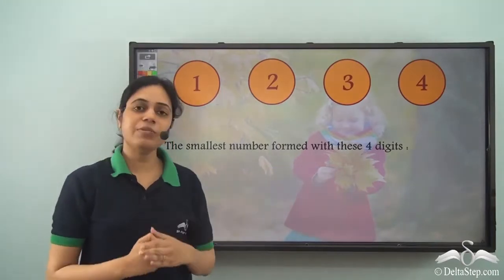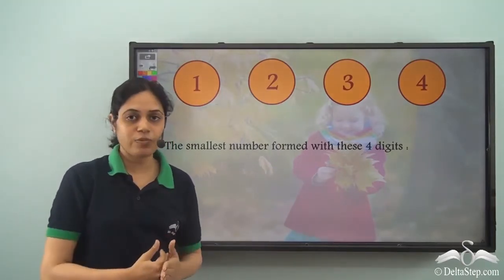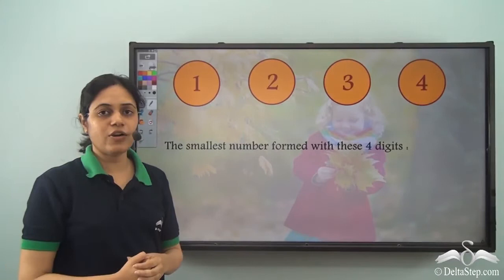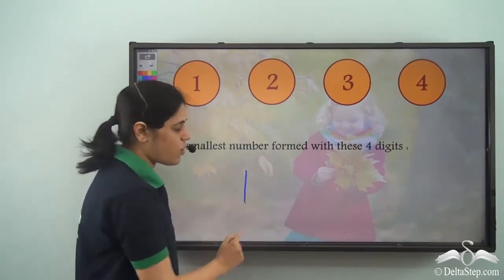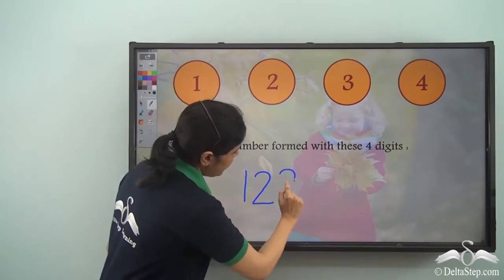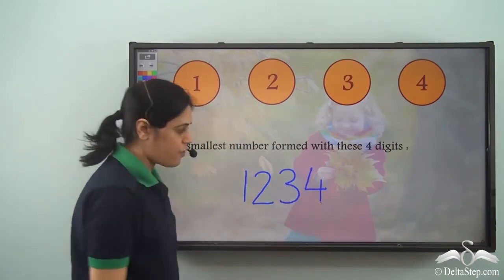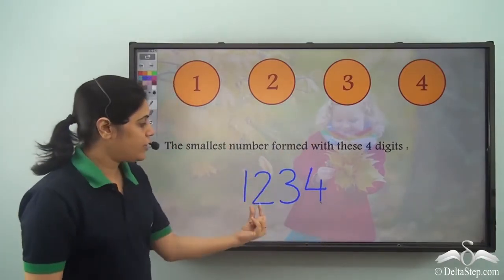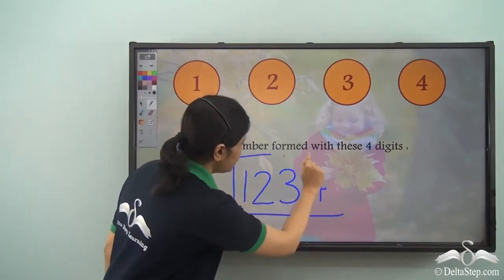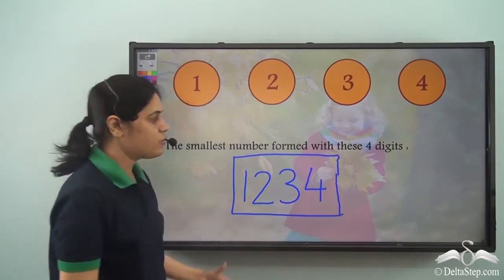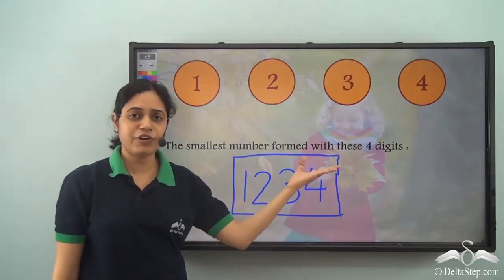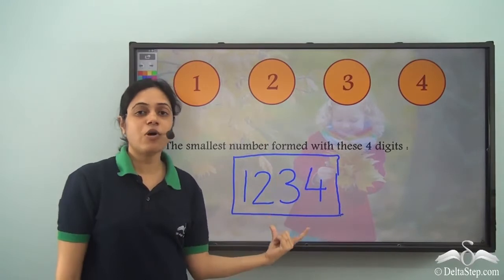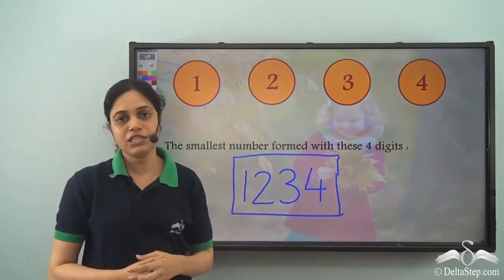How do you form the smallest number using those digits? It's exactly the opposite — arrange the digits in ascending order. So 1 is smallest, then 2, then 3, then 4. So 1234 is the smallest number you can form using these four digits. Every other number you form will be greater than this.